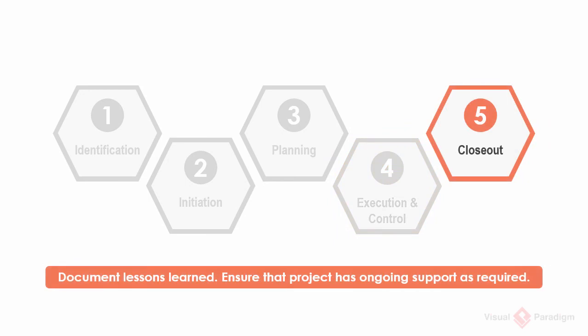Phase five, the closeout phase. This phase involves discussing and documenting the lessons learned from the project, as well as planning and conducting transfer activities. This is how an IT project starts and ends. We will go through the five phases one by one in the coming videos.